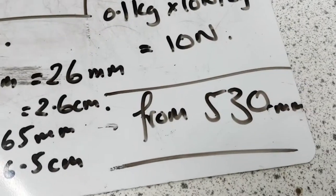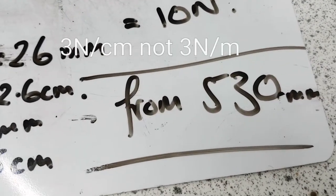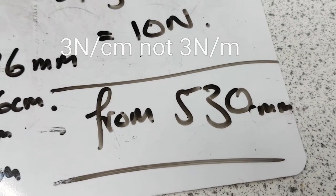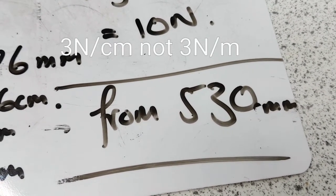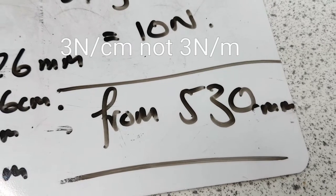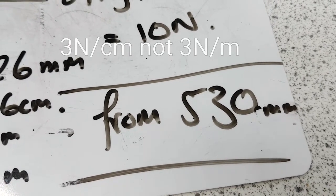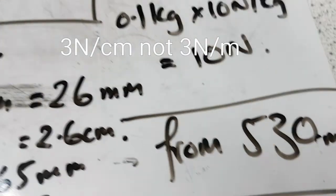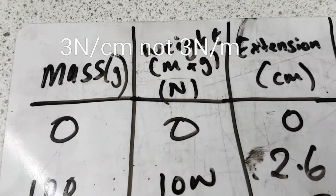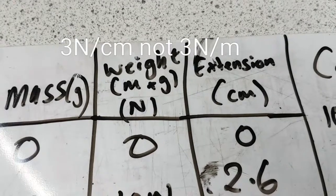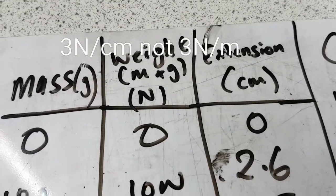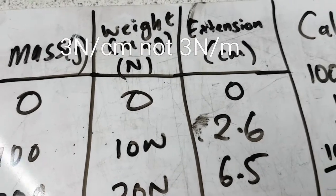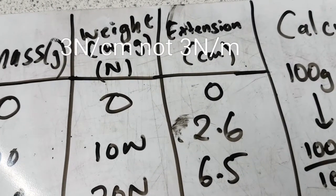What's important is to make a note of your starting point. My starting point was 530 millimeters. That's where I started from, where I'm going to measure the extension from. That is my zero point. At zero mass, there was no extension. At 100 grams, that's 10 newtons, it extended by 2.6 centimeters.